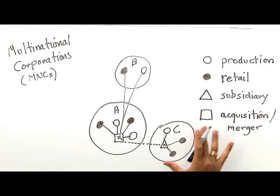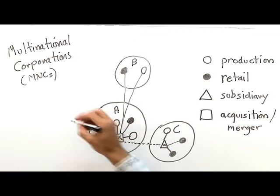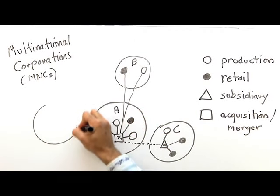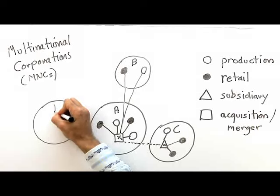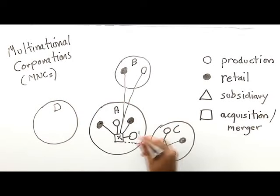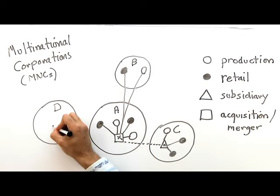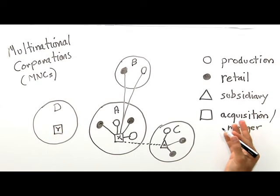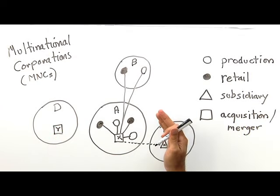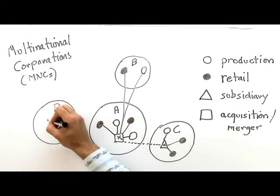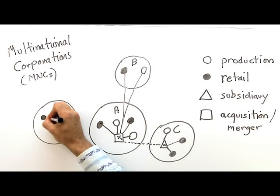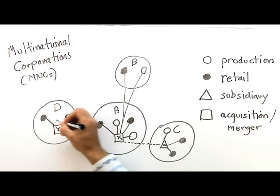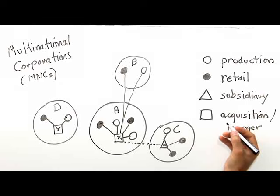Another possibility is that Company X may decide that it wants to expand production into State D. But when it looks at State D, it sees another company in State D, Company Y. And it looks at that company and says, they actually have production facilities and retail outlets already in State D.